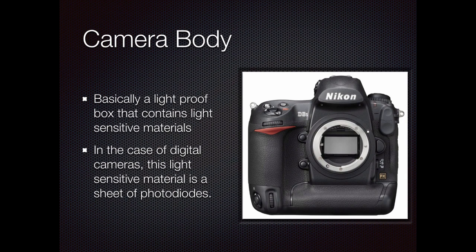The camera body is basically a light proof box that contains some kind of light sensitive material. In the old days that light sensitive material was film. Some of you are old enough to remember putting film in a camera. Basically, film was a light sensitive material that would accept light and change based on it. Now we've replaced it with a sensor that can sense light — you can just use it over and over again. The case of the digital camera is basically a light proof box, and the lens is what allows the light to come in.